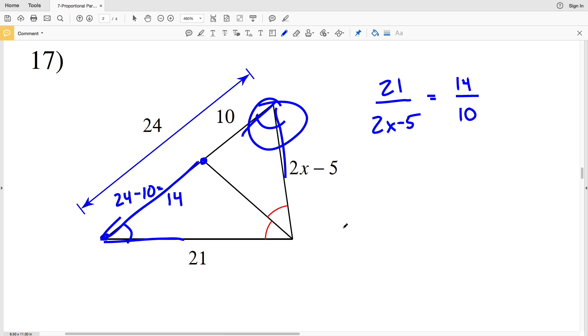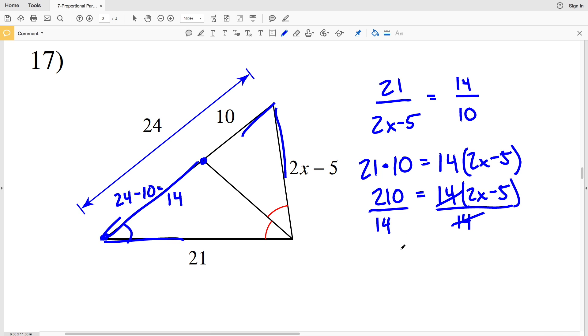So cross multiplying, 21 times 10 equals 14 times 2x minus 5. 21 times 10 is 210, and that's equal to 14 times 2x minus 5. I know that 14 can go into 210 evenly, so I'll divide by 14 next as opposed to distributing. 210 divided by 14 equals 15, and that's going to be equal to 2x minus 5.